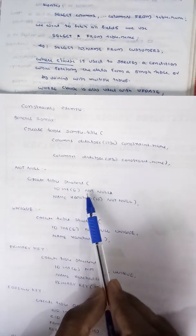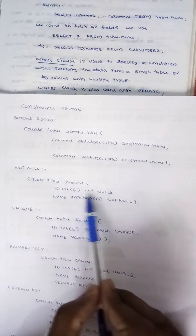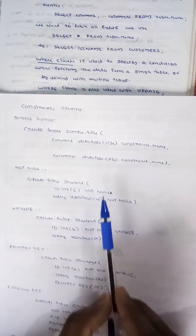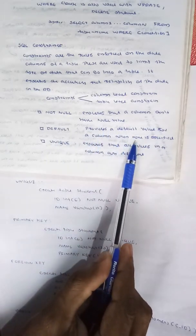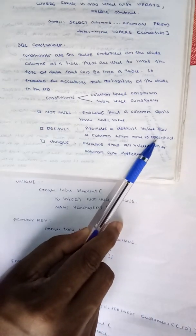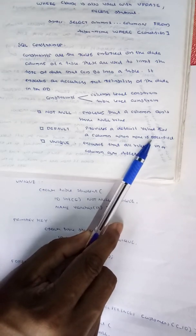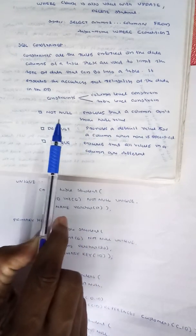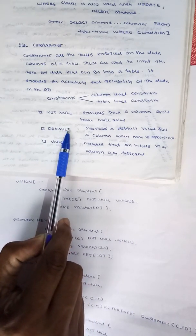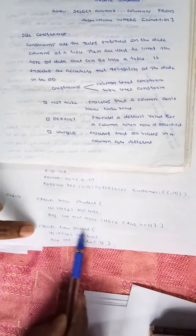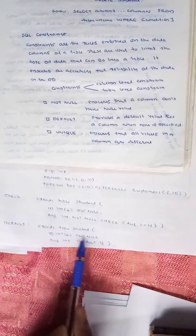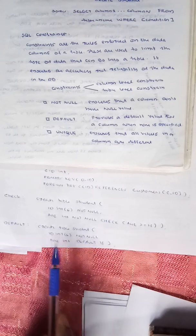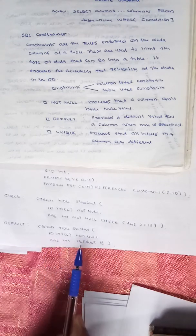The next constraint is DEFAULT. DEFAULT provides a default value for a column when none is specified. So when no value is given for that column, the default value will be applied. For example, create a table and set a default value for a column.